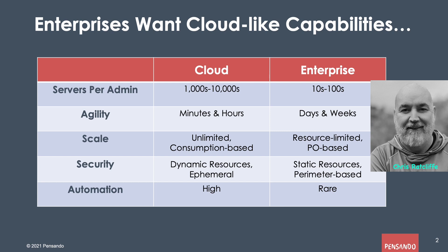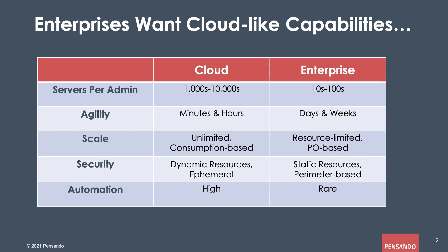And the same thing for scale, security, and automation. Scale is basically unlimited in the cloud. In the enterprise, it's very much resource limited and really based on POs — your scale is actually limited by how much you have to spend on your infrastructure, whereas in cloud it's almost unlimited. In terms of security, in the enterprise it tends to be very much static resources, very much perimeter focused, whereas in the cloud it's dynamic and it's everywhere. And then when you think about automation, on the enterprise side it tends to be very rare, whereas it's just the de facto standard in the cloud. Cloud works at a completely different level in terms of scale, ability to react to the business, the level of security they offer, and it's all driven by automation.